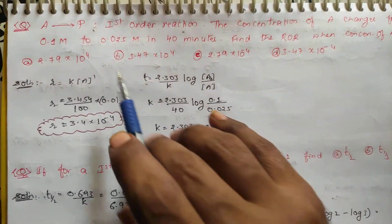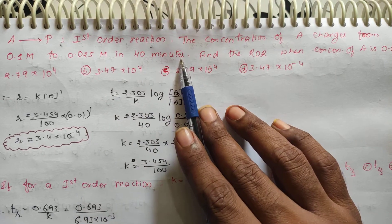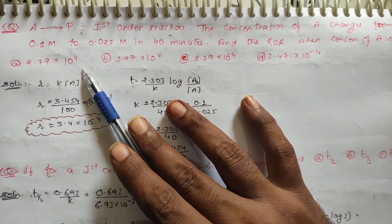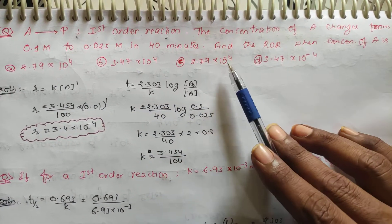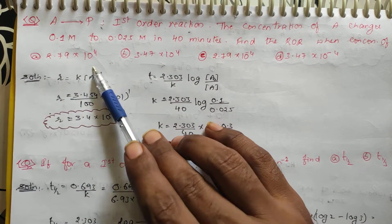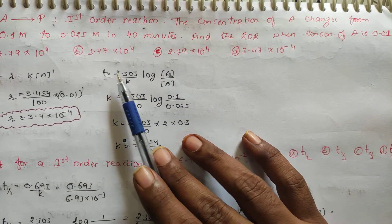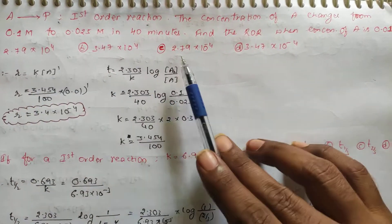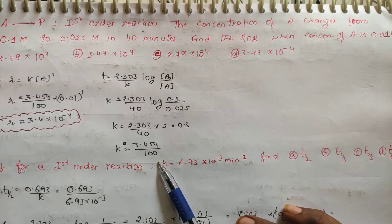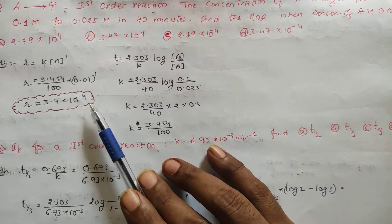Problem 3: A is converted to product (first order). Concentration of A changes from 0.1 M to 0.025 M in 40 minutes. Find the rate when [A] = 0.01 M. First find K: K = (2.303/40)·log(0.1/0.025) = 3.454×10⁻² min⁻¹. Then rate = K·[A] = 3.4×10⁻⁴ mol/dm³/min.